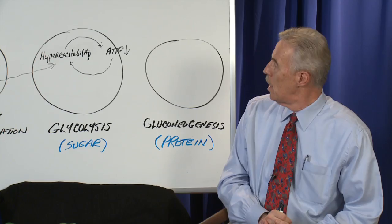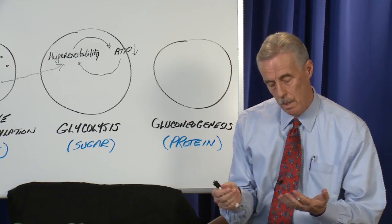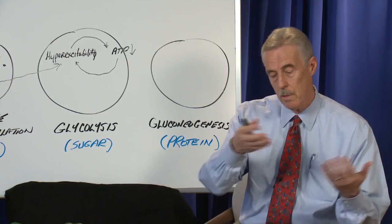The next thing you need to do is reverse whatever started this process, and that could be detoxification, treating the infection that you have, rebalancing hormones, stopping any excitatory factors that you're using - cigarettes, drinking, et cetera.